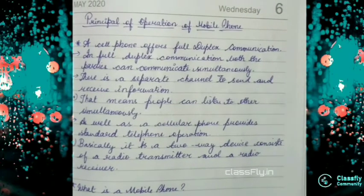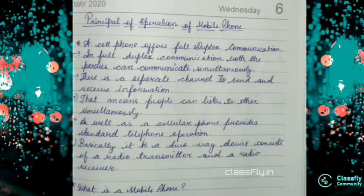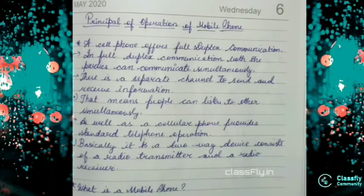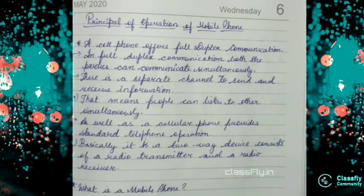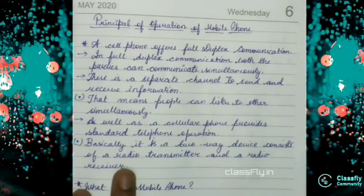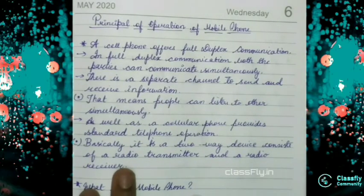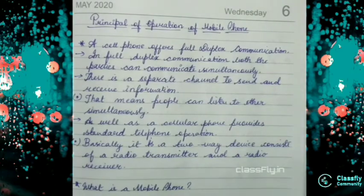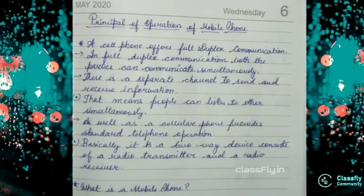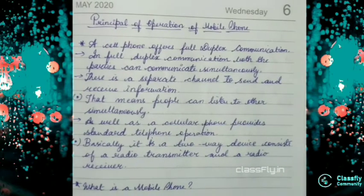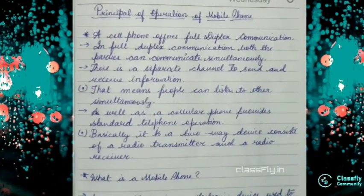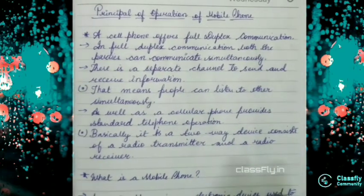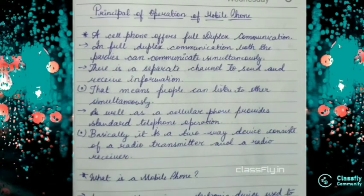So today is the most interesting topic because the thing which we will today learn is about a particular thing without which we can't live our life. So basically we will be dealing with the topic the principle of operation of mobile phone. See we know that mobile phones help us to contact any number of people at simultaneous times at any place, so it is basically helpful to us digitally as well as we can communicate with any person at any country. So today we will see how it operates.